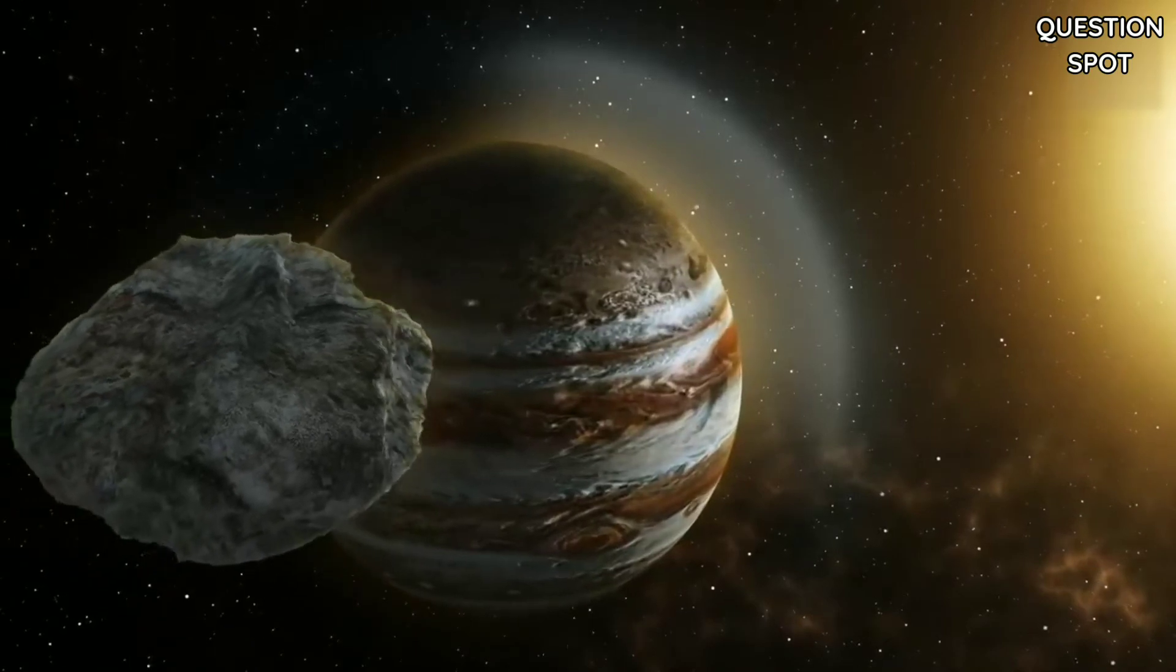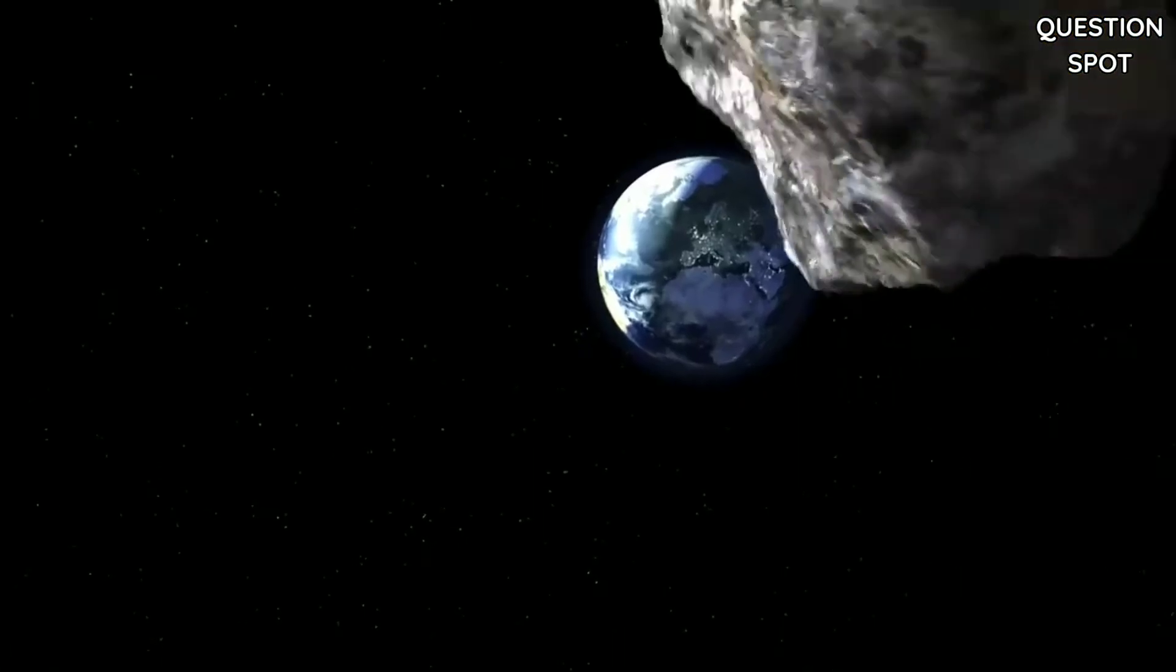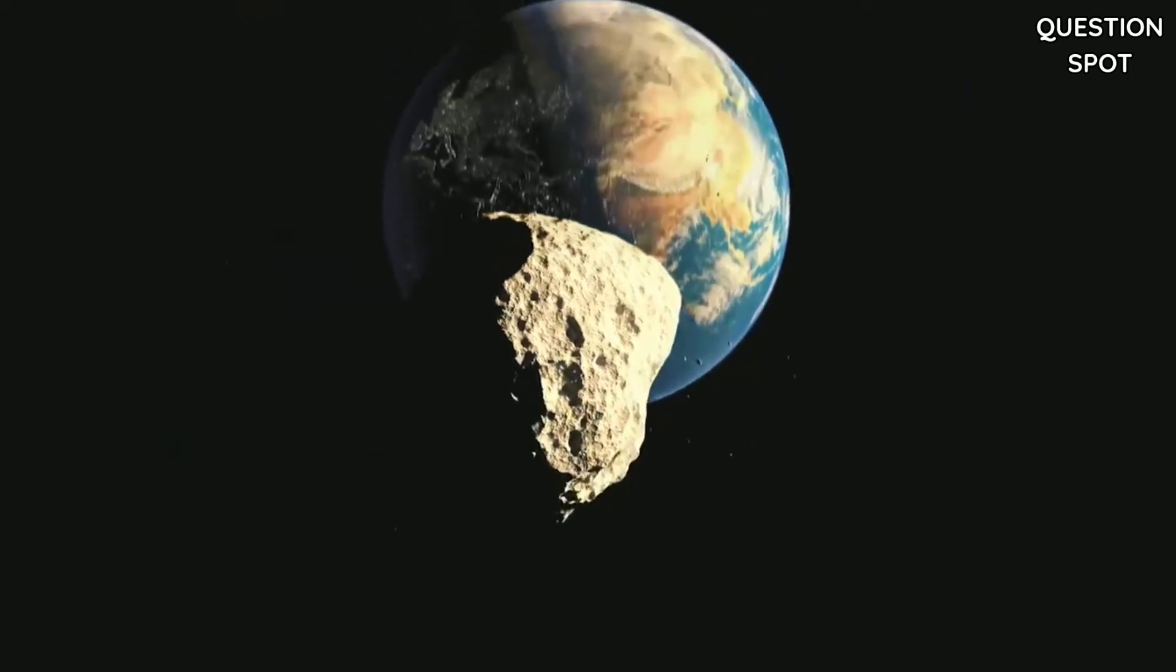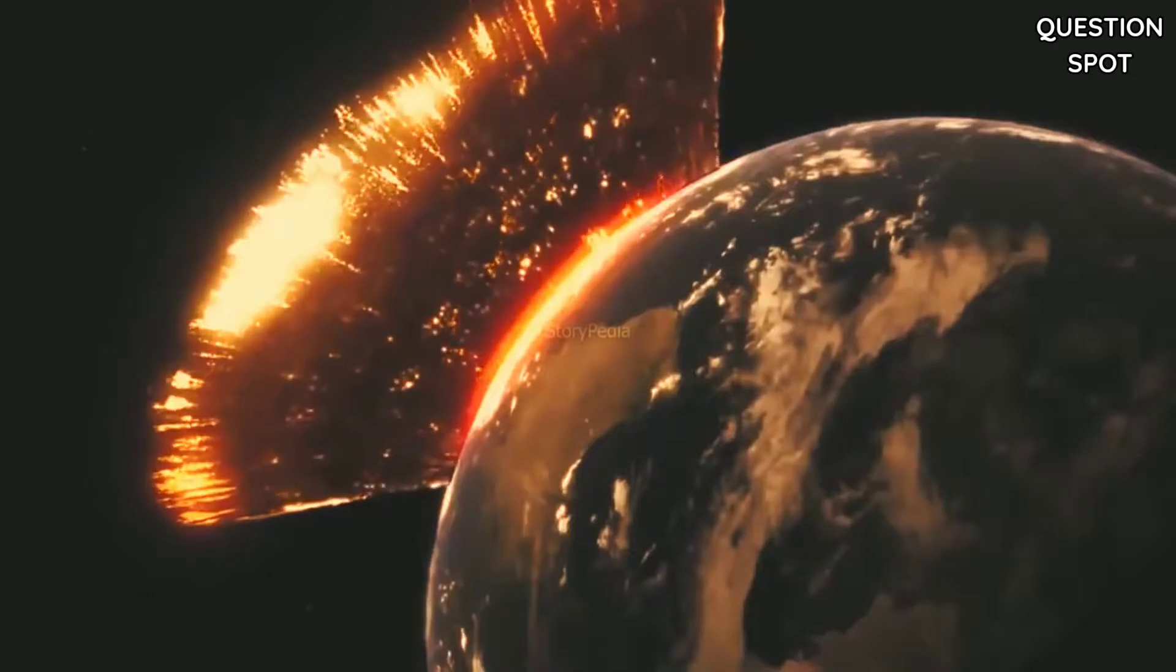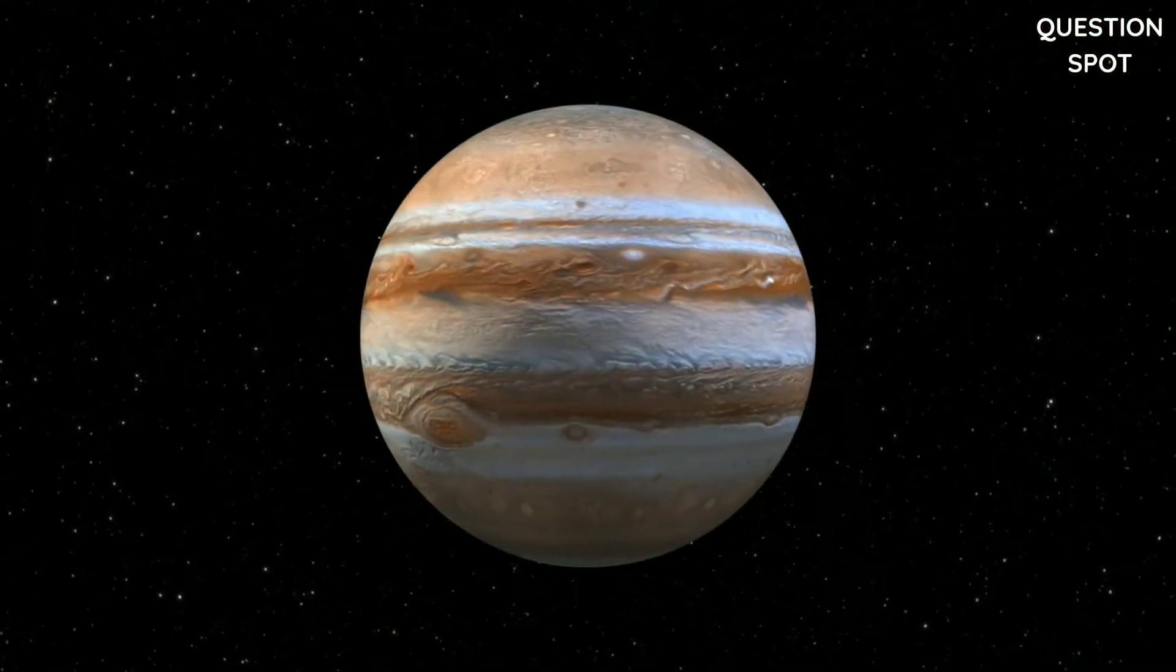Jupiter's gravity is thought to sling most of these fast-moving ice balls out of the solar system before they can get close to Earth. So long-period comets are thought to strike Earth only on very long timescales of millions or tens of millions of years. Without Jupiter nearby, long-period comets would collide with our planet much more frequently.